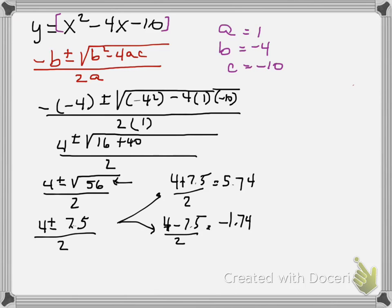So we have solved the equation. What this means is that there is an x-intercept at 5.74 and an x-intercept at negative 1.74.